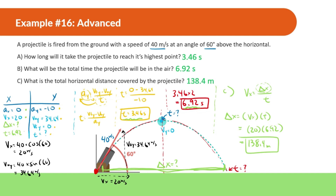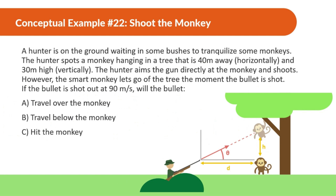One final question — a classic physics question. A hunter is on the ground waiting to tranquilize some monkeys. The hunter spots a monkey hanging in a tree 40 meters away horizontally and 30 meters high vertically. The hunter aims directly at the monkey and shoots. The smart monkey lets go of the tree the moment the bullet is shot. The bullet is shot at 90 meters per second. Will the bullet travel over the monkey, travel below the monkey, or hit the monkey?